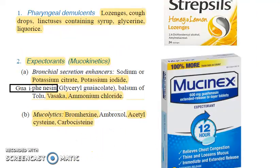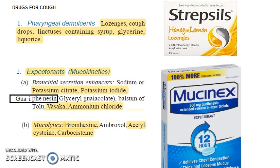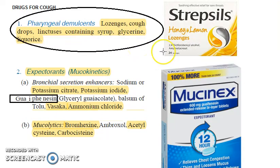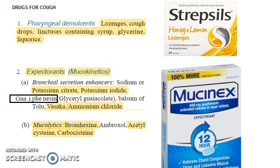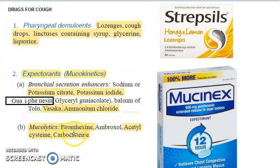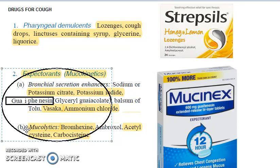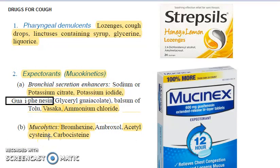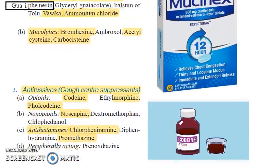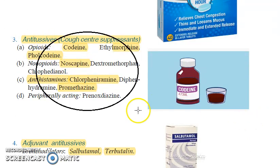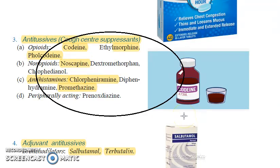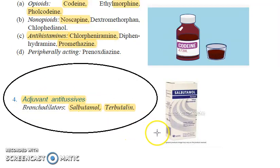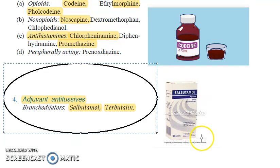Let's take a recap. Drugs for cough: pharyngeal demulcents — lozenges, cough drops, syrup, glycerine, liquorice. Expectorants or mucokinetics — bronchial secretion enhancers like guaifenesin, potassium iodide, potassium citrate, ammonium chloride, vasaka; mucolytics — bromhexine, acetylcysteine, carbocysteine. Antitussives — cough center suppressants: opioids codeine, ethylmorphine, folcodeine; non-opioids noscapine; antihistamines chlorpheniramine, promethazine. Adjuvant antitussives: salbutamol, terbutalin — also used in asthma.